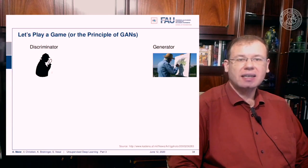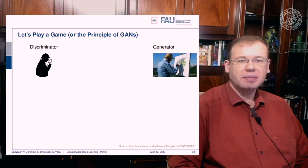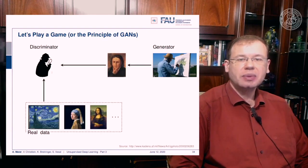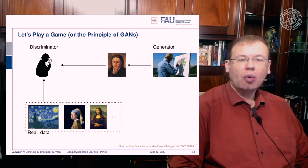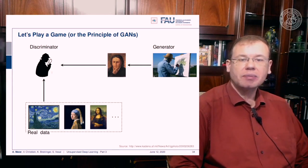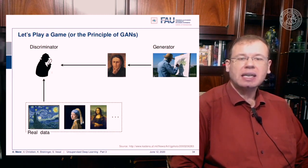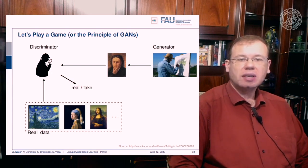The key idea of GANs is to play the following game. You have a generator and a discriminator. The generator is somebody who generates a fake image, and then the discriminator has to figure out whether the generator produced something real or something fake. The discriminator can decide fake or real, and in order to train the discriminator, it has access to many real data observations. The outcome of the discriminator is whether the input was real or fake.